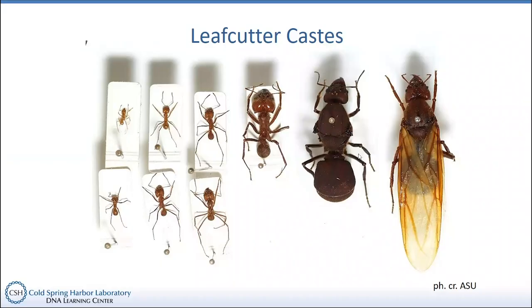Let's take a closer look at the leafcutter castes so you can see them a little better. We see the minima here, the medium workers here, and the maxima here. Then we have a queen and a drone. You can see how the queen and drone are quite a bit larger than the rest of the workers. This picture also highlights that there's variation or polymorphism within each of the different worker castes — the media workers are all various different sizes.